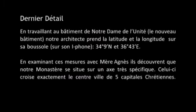En travaillant au bâtiment de Notre-Dame de l'Unité, notre architecte prend la latitude et la longitude sur sa boussole : 34 degrés 9 minutes nord et 36 degrés 43 minutes est. En examinant ces mesures avec Mère Agnès, il découvre que notre monastère se trouve sur un axe très spécifique, qui croise exactement le centre-ville de cinq capitales chrétiennes.